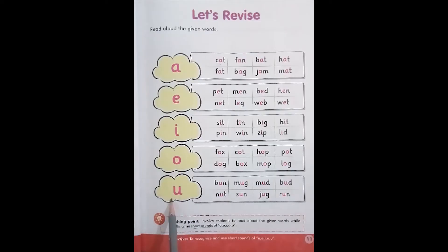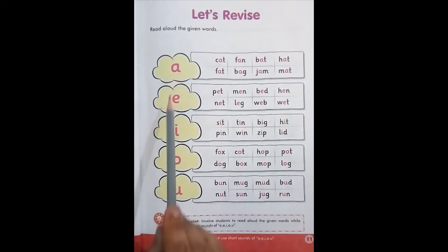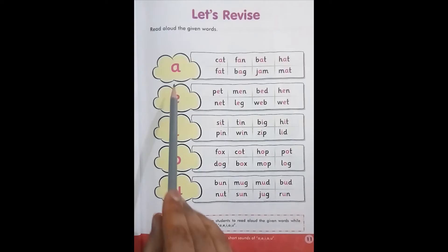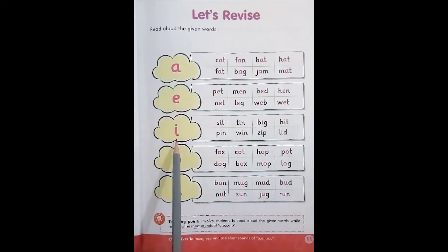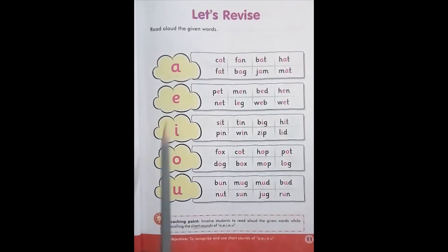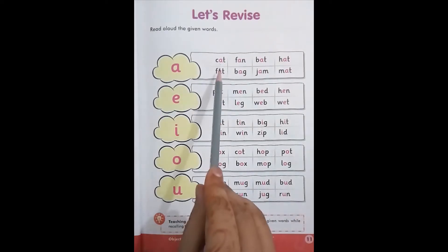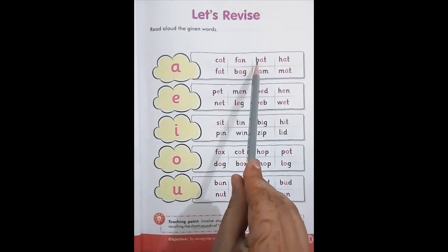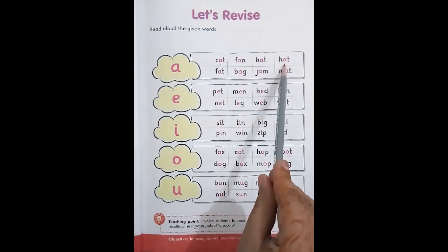Let's practice their sounds: A, E, I, O, U. These vowel letters are short vowel sounds. For example: cat, fan, bat, hat.